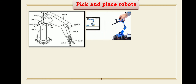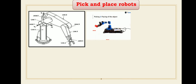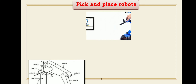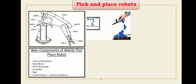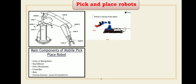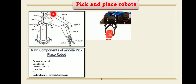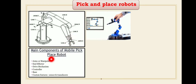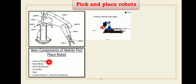Robots are commonly used for shifting an object from one location to another. There are different main components of a pick and place robot. The first basic component is the arm or manipulator. The manipulator is a combination of four mechanical links and three joints. You can directly connect a mechanical type end effector to the manipulator for pick and place operations.